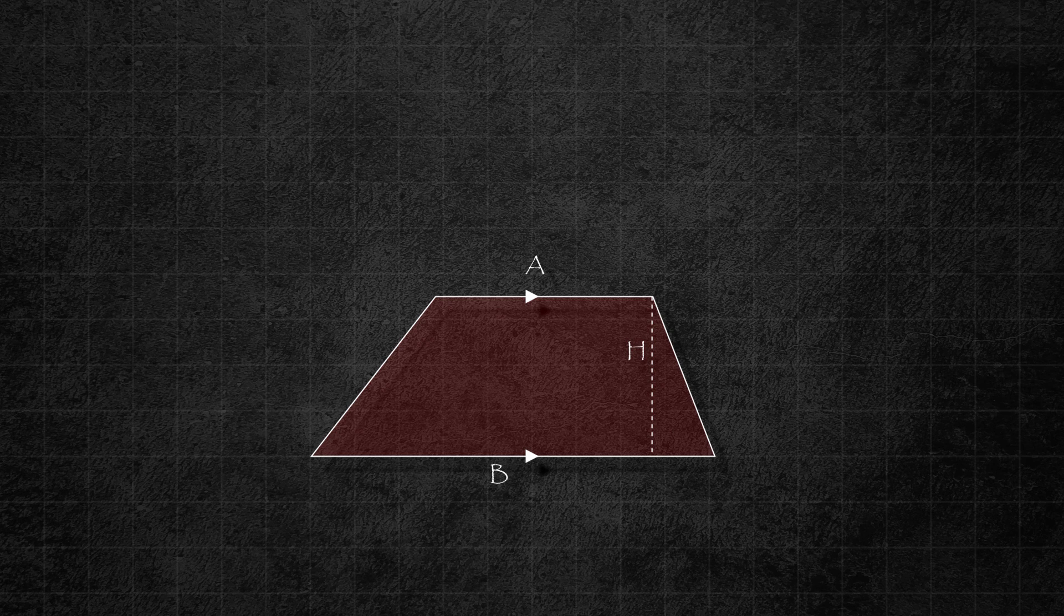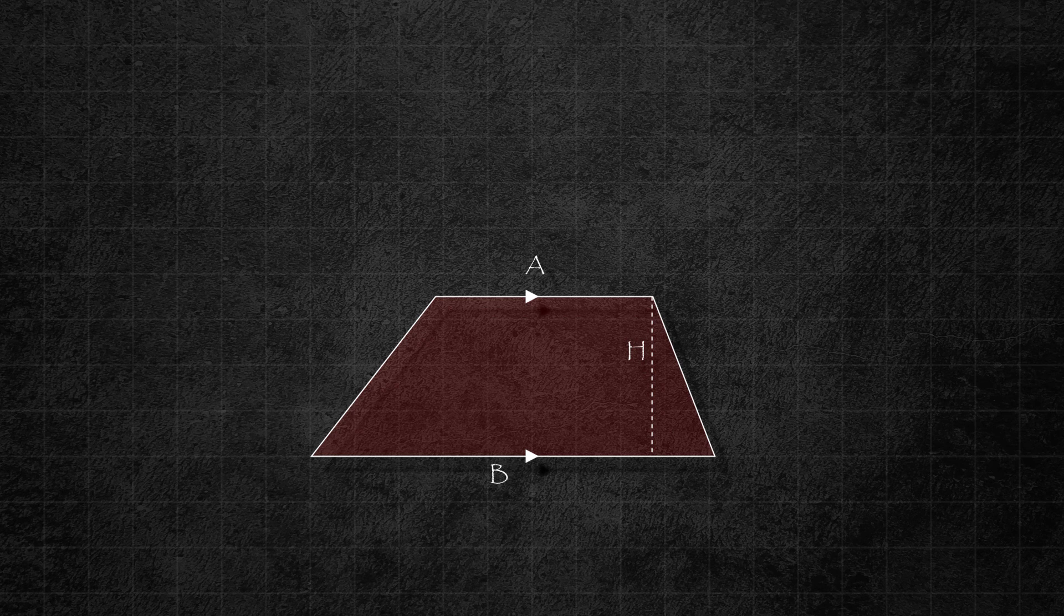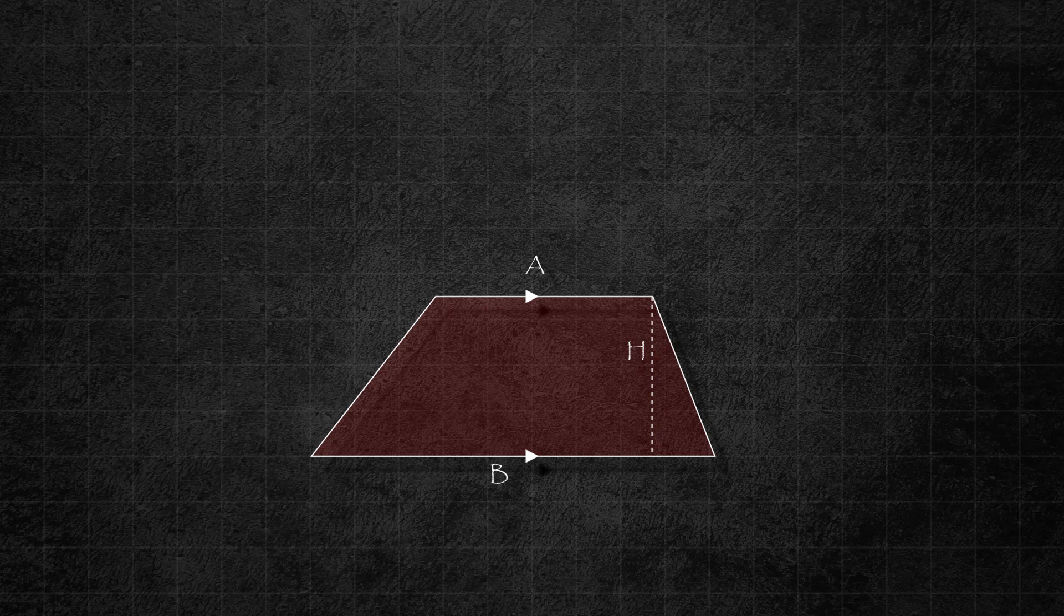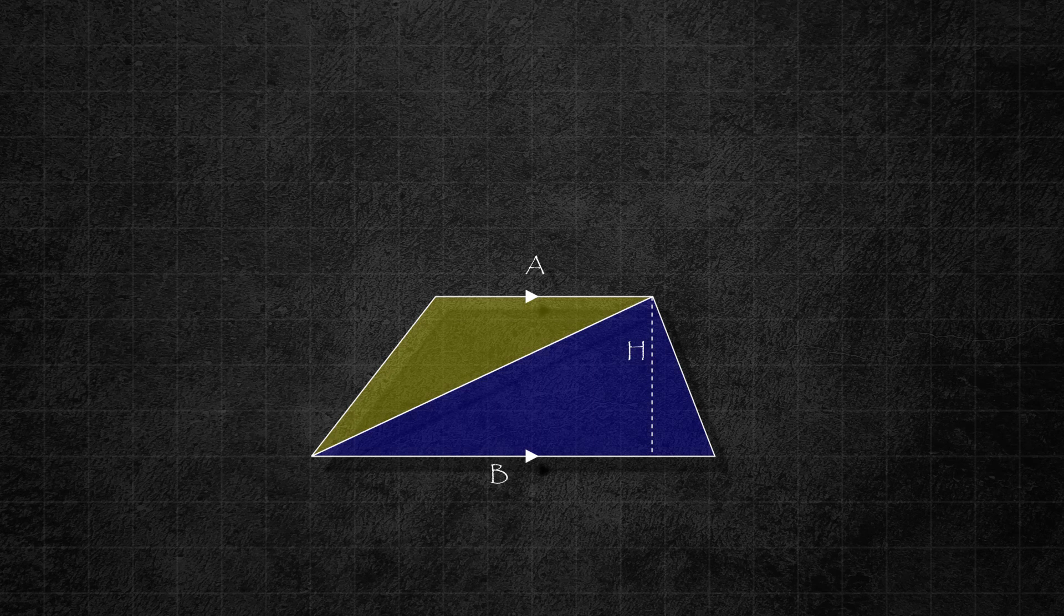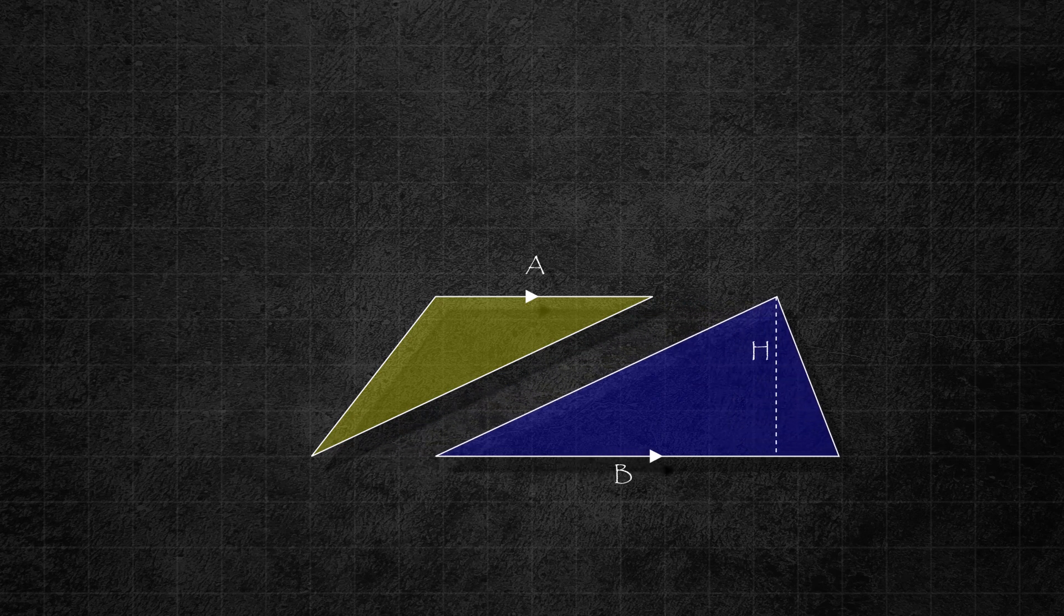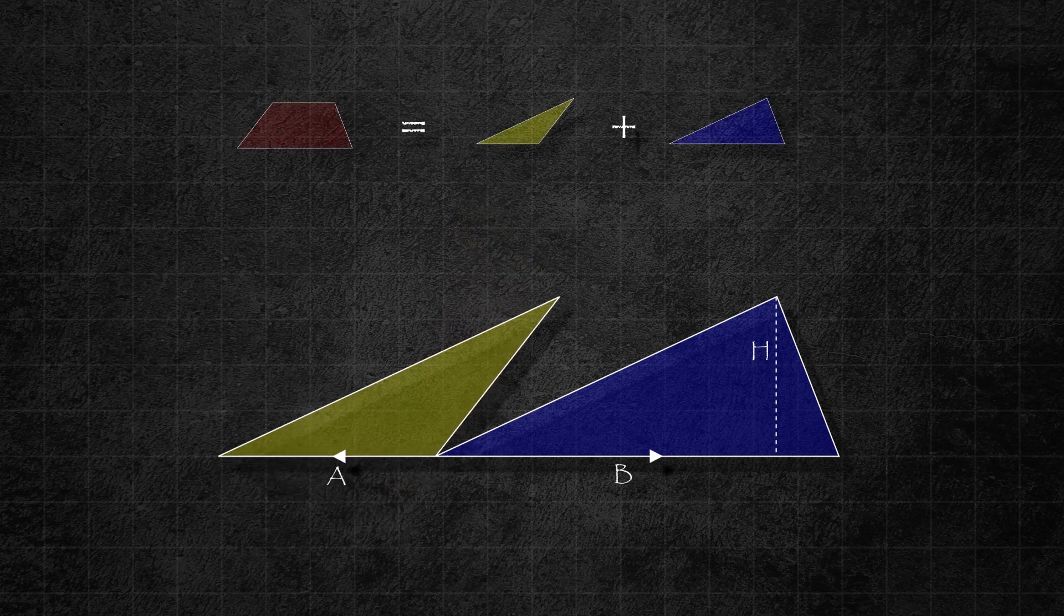The next shape on our list is the trapezoid, also known as trapezium. A trapezoid is a four-sided shape with only one pair of parallel sides. In the figure, the top side has a length of a units and the bottom side has a length of b units, and the height is h units. To calculate the area of a trapezoid, we can split it into two triangles. Both of these triangles have a height of h units. The base of one triangle is b units, and if we rotate the yellow triangle we can see that the base of this triangle is a units.